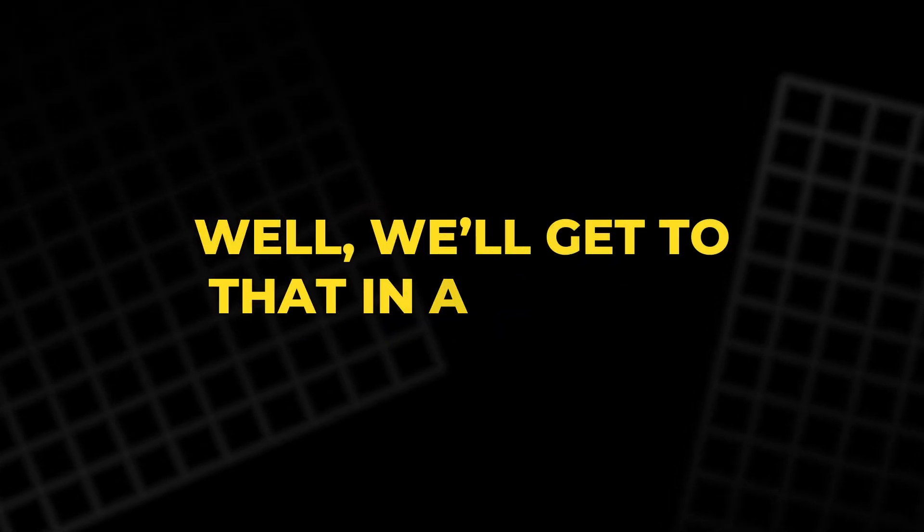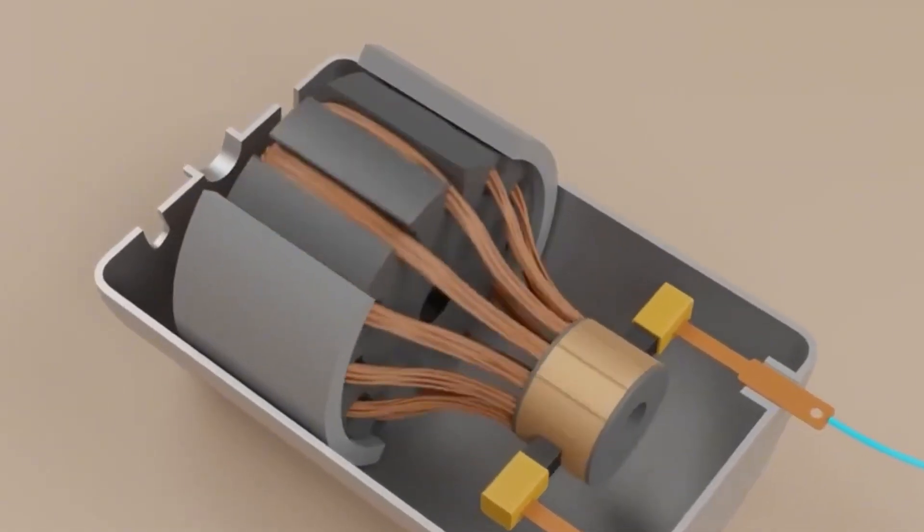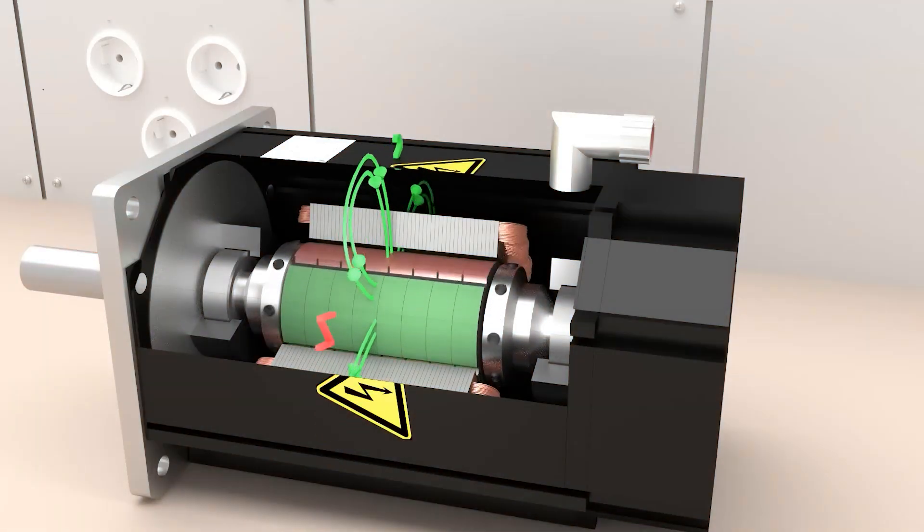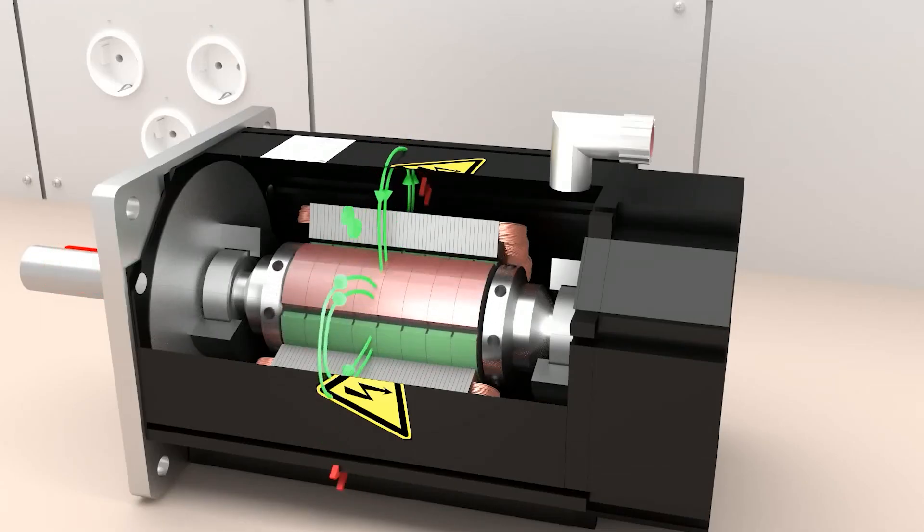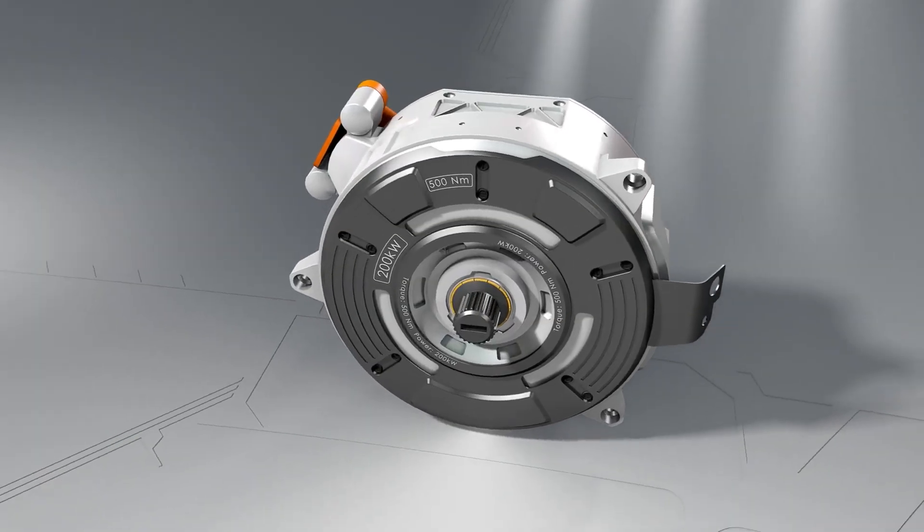So why does this matter for electric motors? The key takeaway here is that both electricity and magnets are involved in creating motion, exactly what we need to make motors work. Stay with me as we dive deeper into how these forces come together.